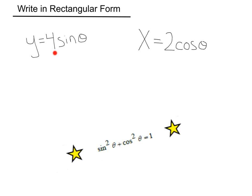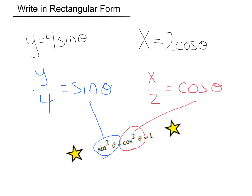Let's see how this applies. First, let's solve for sine theta and cosine theta. That gives us y over 4 equals sine theta, and x over 2 equals cosine theta. Now we can use our Pythagorean identity to plug in for sine theta and plug in for cosine theta, setting it equal to 1.